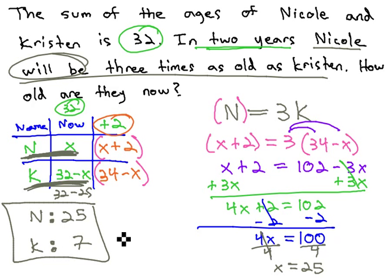Nicole is 25, and Kristen is 7. The sum of their ages is 32, and in 2 years, Nicole will be 3 times as old as Kristen.